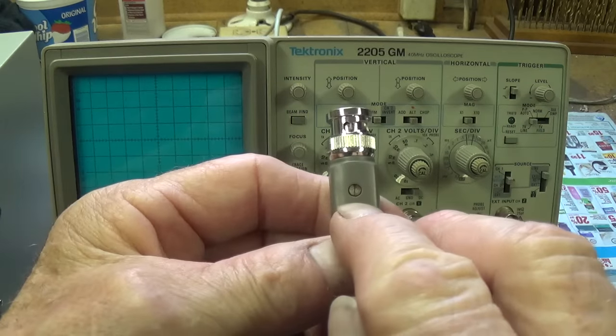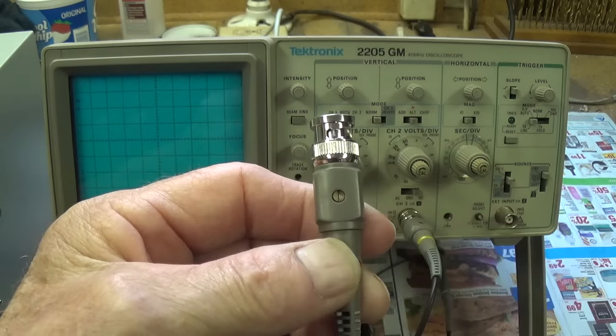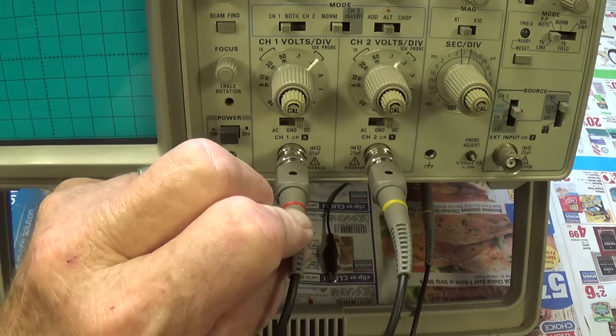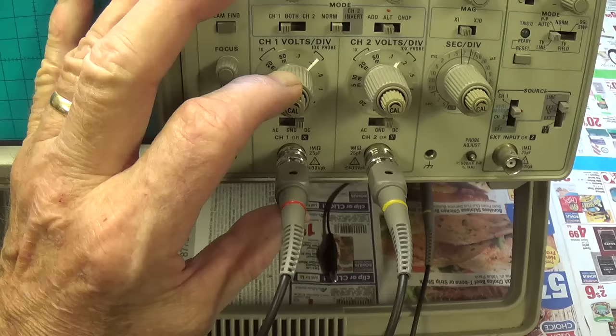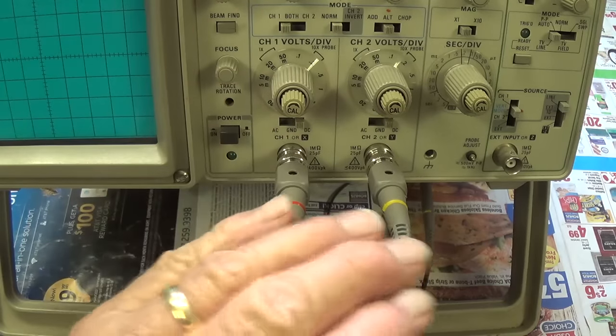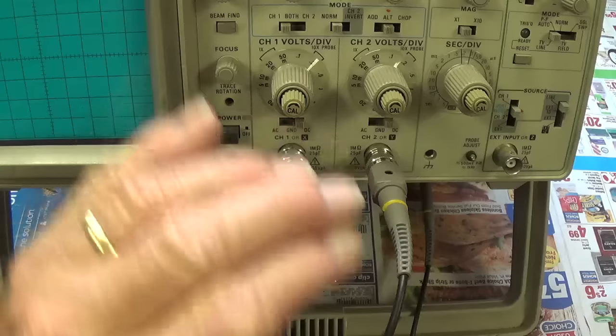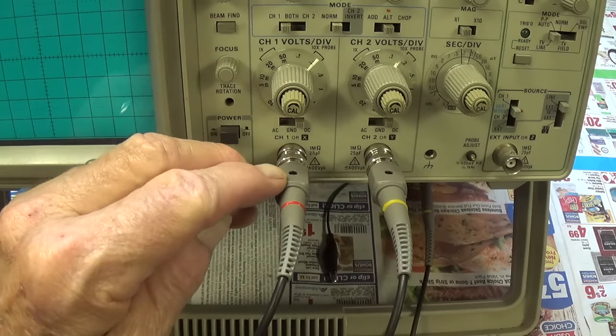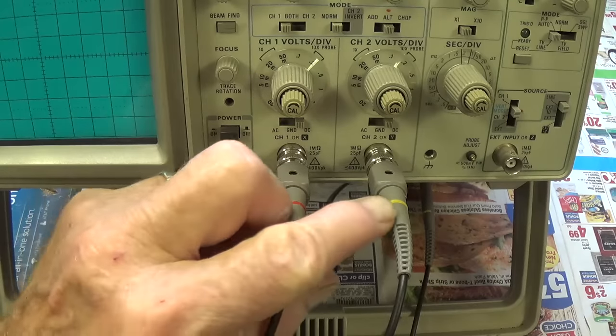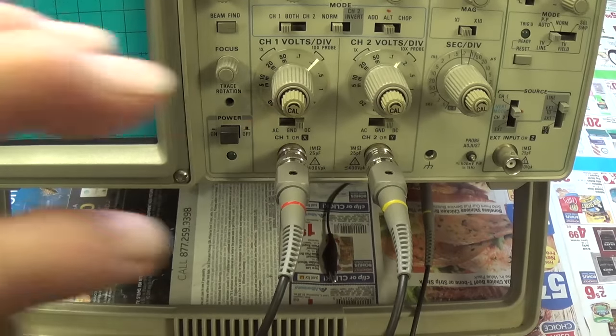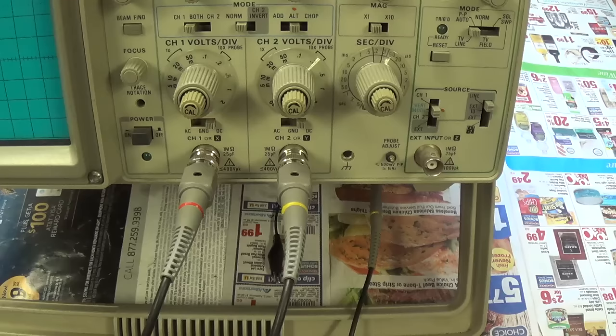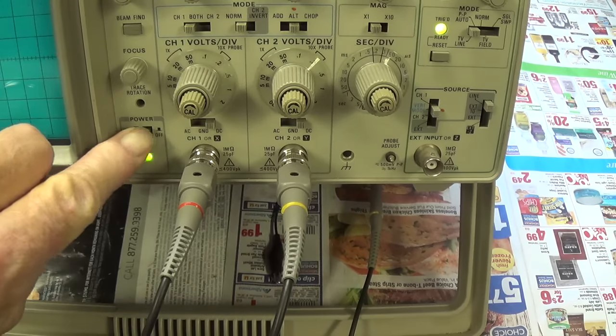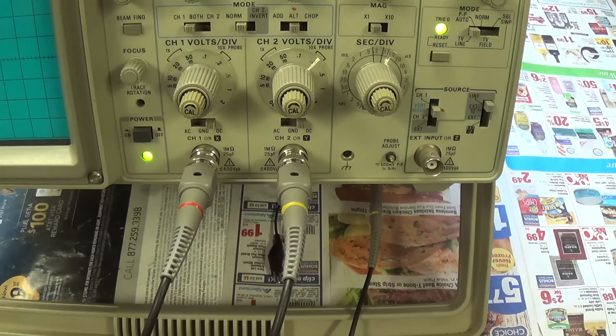Now let's get to the mysterious screw that many of you have been wondering about. This would be a good time for you to attach either one of your probes if you have a single channel oscilloscope, or both of your probes if you have a two-channel oscilloscope using the BNC connectors. Get them connected and put the little mysterious screw at the top of both of your probe connections. With that done, let's push the on-off button and turn on the oscilloscope and let it start to warm up.